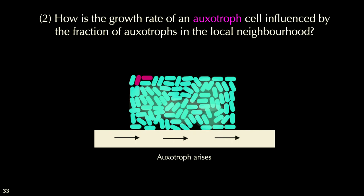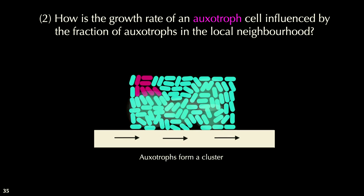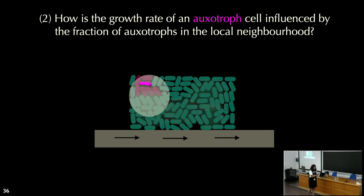The next question I was interested in testing was how the growth rate of an auxotroph cell is influenced by the fraction of auxotrophs in a local neighborhood. Here you have a pink auxotroph cell that emerges, grows, and divides, forming a cluster because it can take up amino acids leaked by the nearby wild type cells. I'm interested in understanding how the growth of this focal auxotroph cell depends on the fraction of other pink auxotrophs in that local neighborhood — roughly four to five cell lengths from that cell.